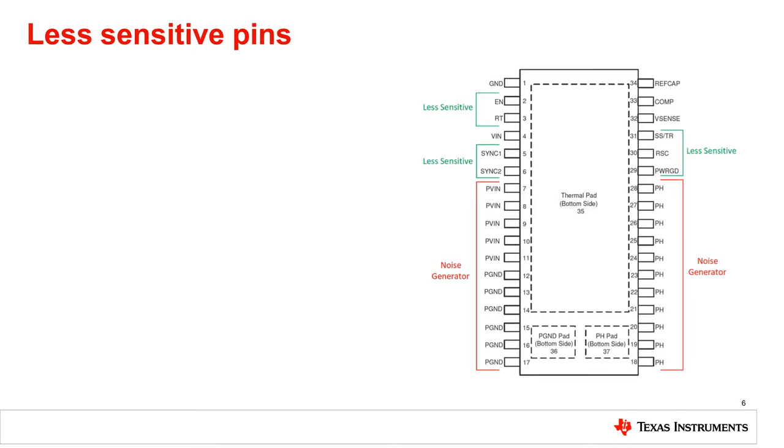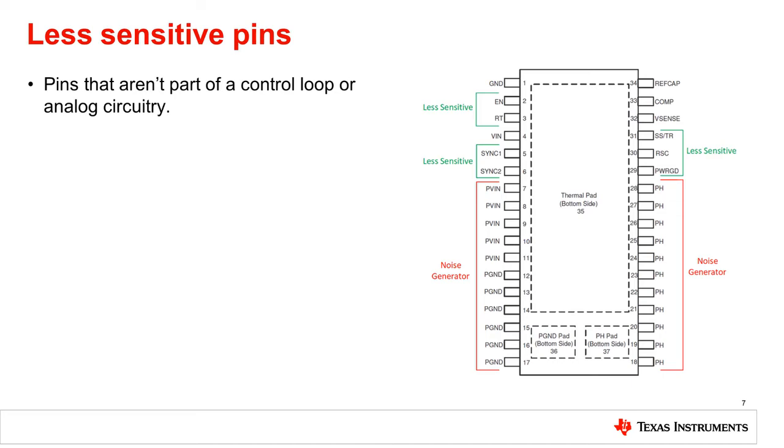Less sensitive pins, while not noise immune, are less likely to be affected than other pins as they are not part of the sensitive control loop of the converter or provide power rails for any analog circuitry. They are often less sensitive because they either stay at steady voltages for most of the time, or are used to create current mirrors internal to the device.